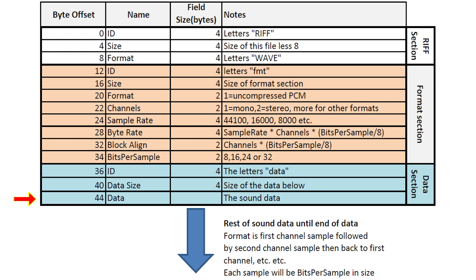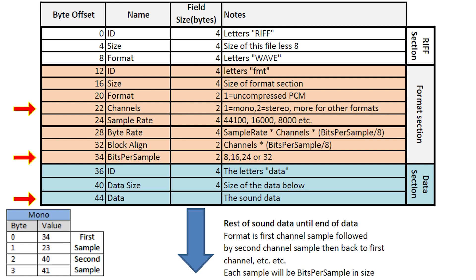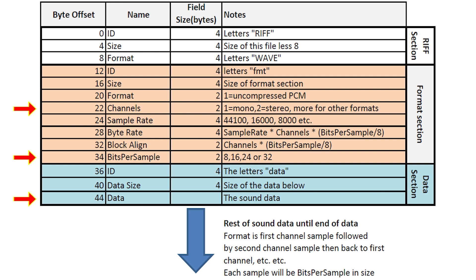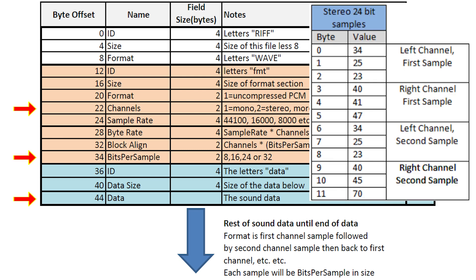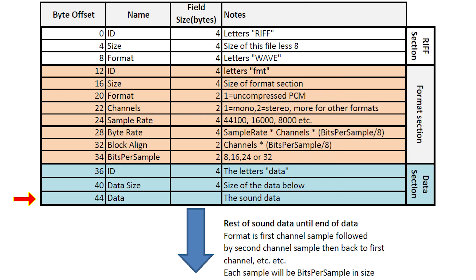How the data is formed depends on the bits per sample and the channels. If we have mono sound at 16 bits per sample, the first two bytes would be the first sample and then the next two the second sample. However, if there were two channels — stereo — and bits per sample was 24, then the first three bytes would be the value for the first left sample and the next three the value for the right channel first sample, repeating until the end of the data. Note that if the RIFF file is a WAV file, the data will only start at offset 44 decimal. For other types of data, it probably won't.